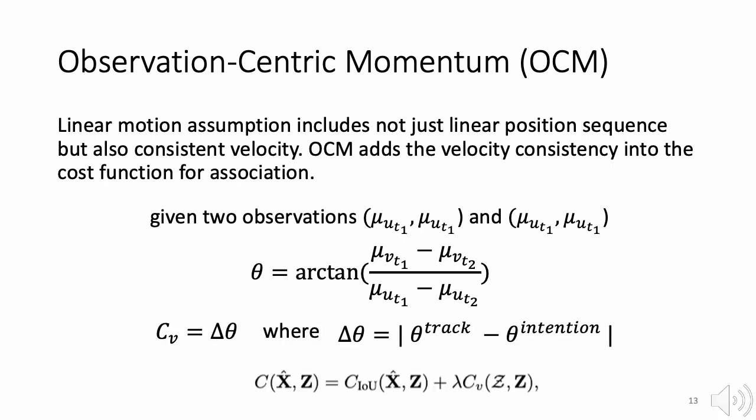So, following implementation by SORT, we sum up the cost from IoU terms and the cost from velocity consistency to make the final cost matrix. Then we use Hungarian algorithm to output the final association matrix between Kalman filter estimations and detector observations.